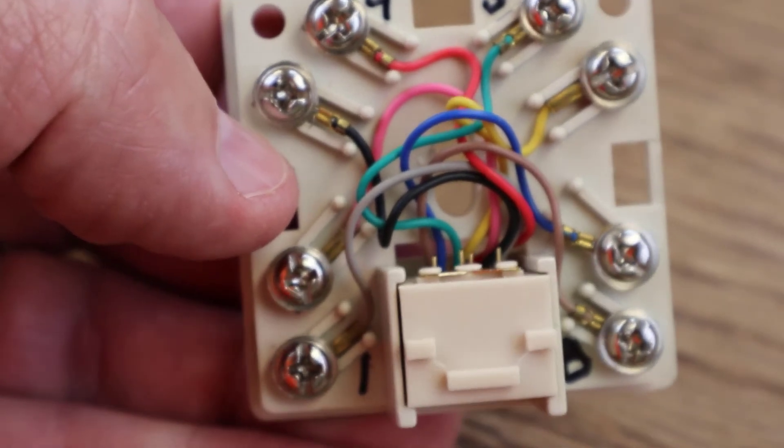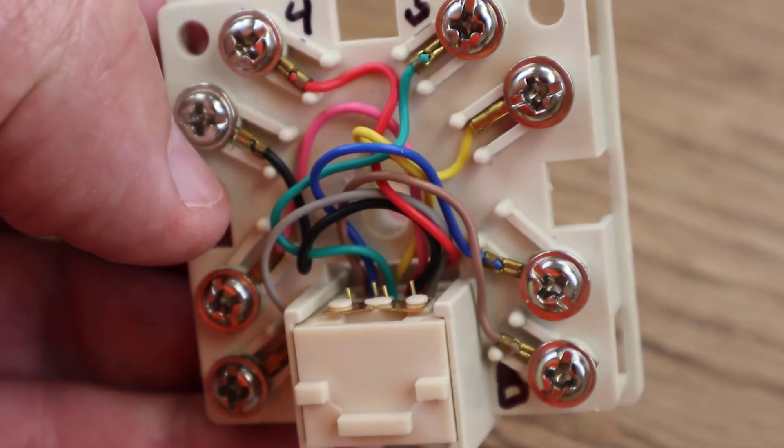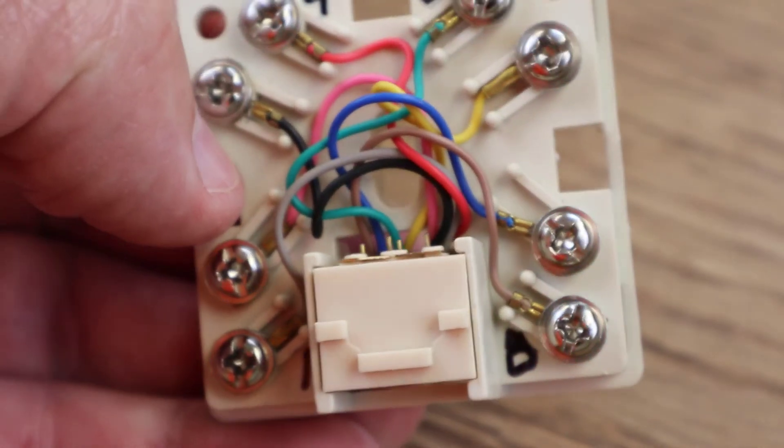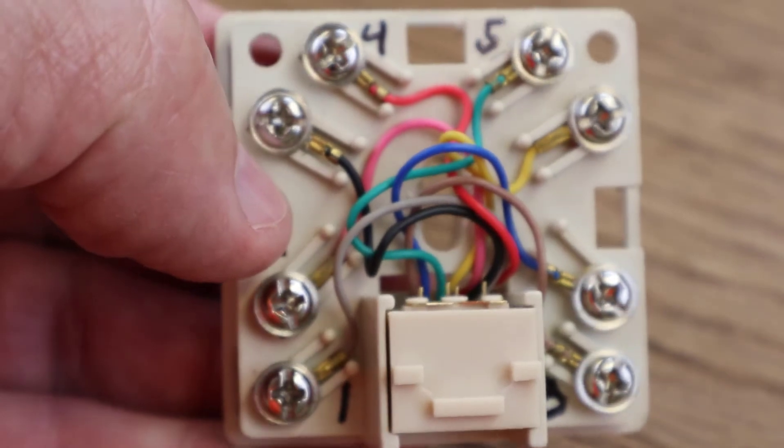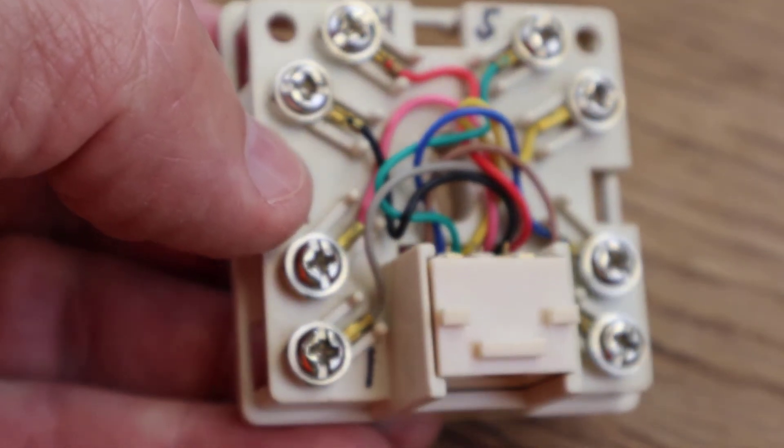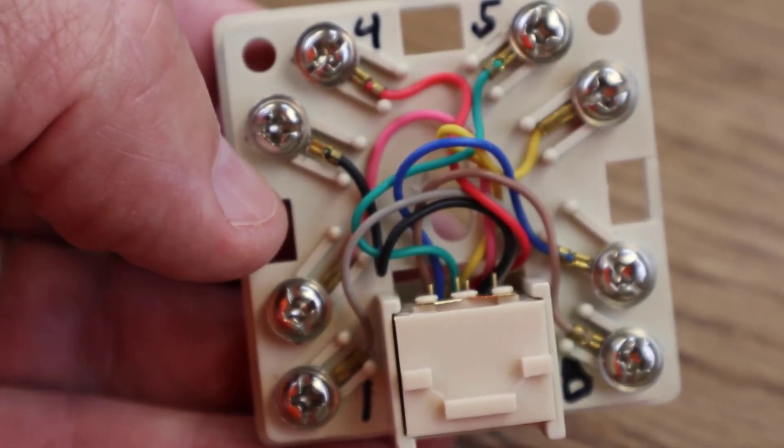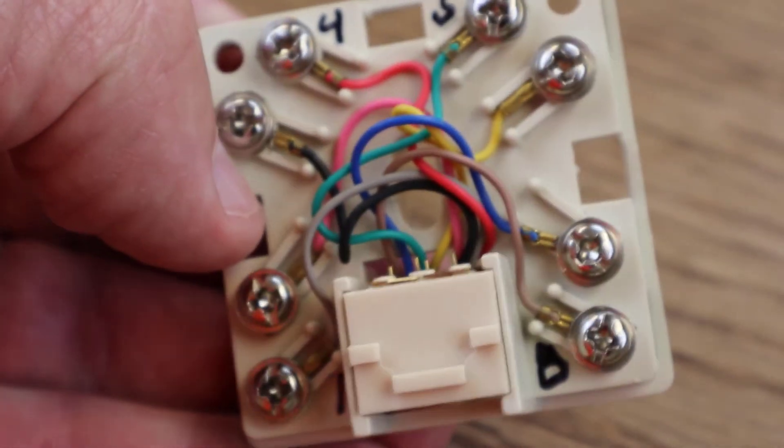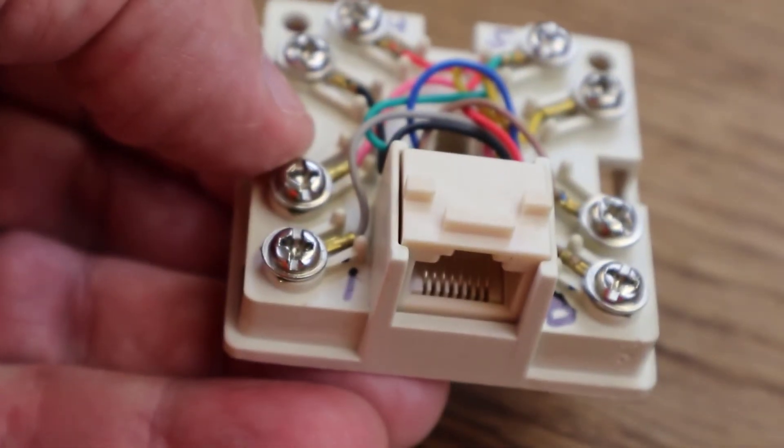In other words, if you tested, if you touched pin five and pin eight, they would set your light off on your continuity tester. Same with pin four and pin one. Same with terminal one and terminal four, terminal eight and terminal five. So those are all making contact.